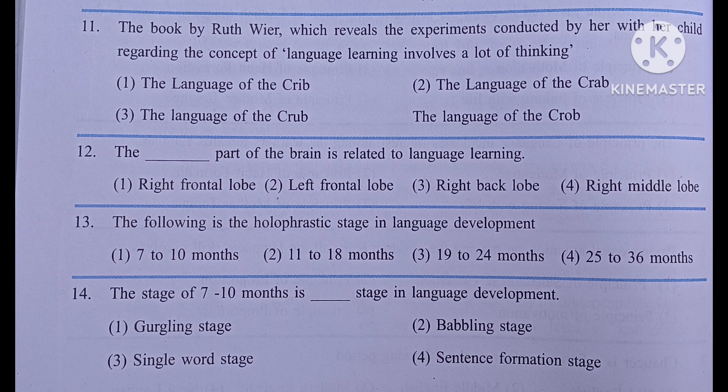The stage of 7 to 10 months is the dash stage in language development: number one, gurgling stage; number two, babbling stage; number three, single word stage; number four, sentence formation stage. The answer is babbling stage.